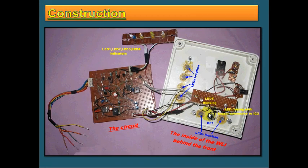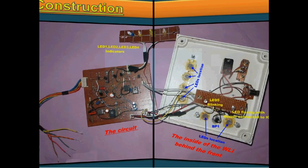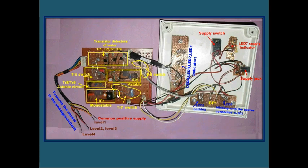Now, the circuits of the water level indicator. As you can see here, this is the circuit itself and this is behind the front of the water level indicator. These are the different LEDs which indicate the level of water. This is the transistor detectors here: TR1, TR2, TR3, TR4.